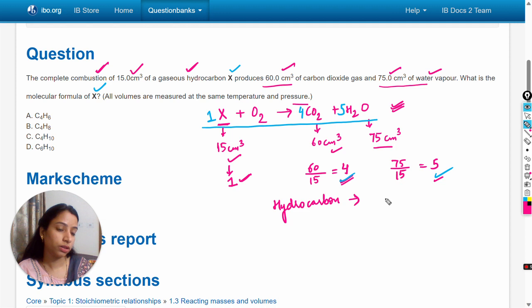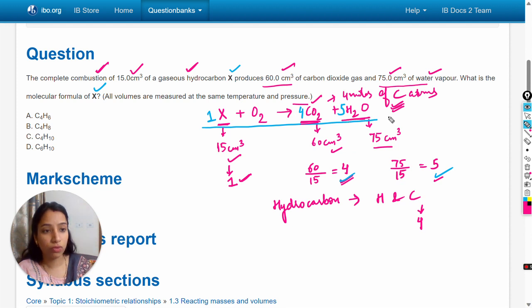So in the equation we can see that there are 4 moles of carbon dioxide. 4 moles of carbon dioxide contain 4 moles of carbon atoms, so it will be 4.